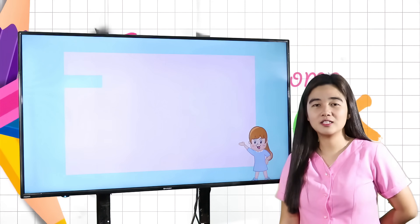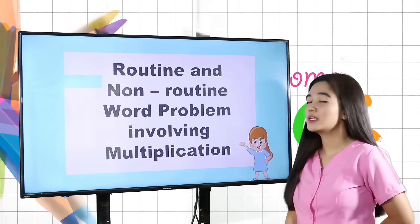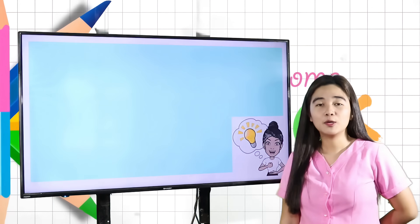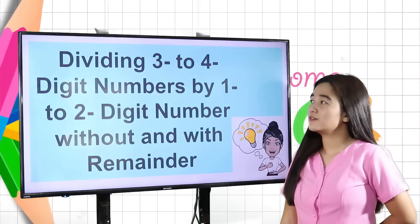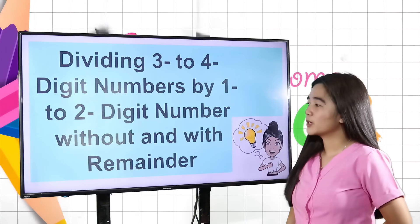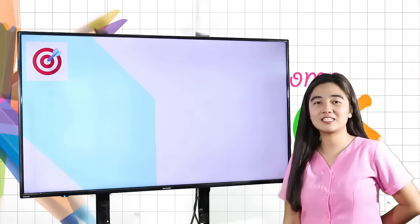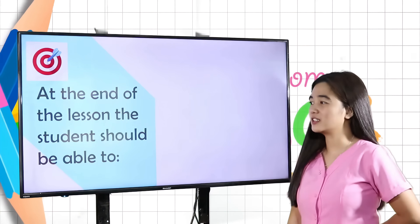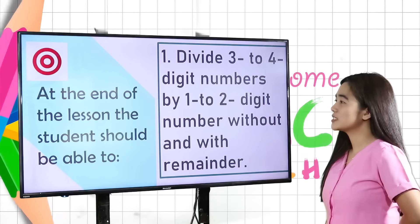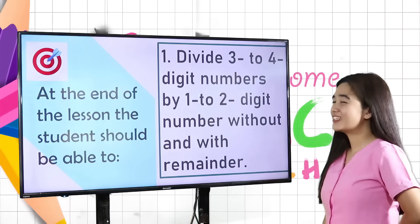In the last video lesson, you learned about routine and non-routine word problems involving multiplication. Now, in this video lesson, we will learn all about dividing 3 to 4-digit numbers by 1 to 2-digit numbers without and with remainder. Our objective for today is that, at the end of the lesson, you should be able to divide 3 to 4-digit numbers by 1 to 2-digit numbers without and with remainder.